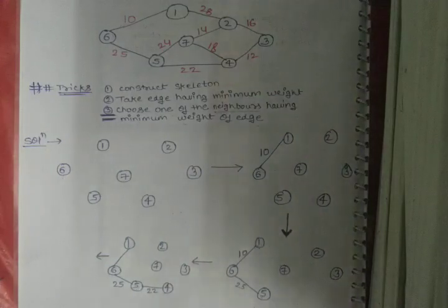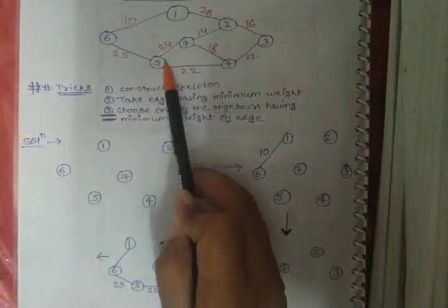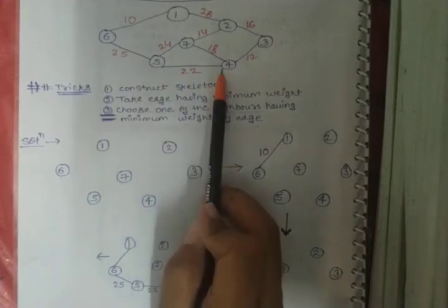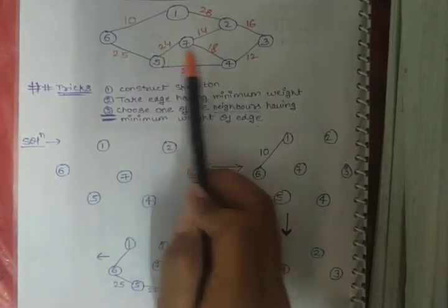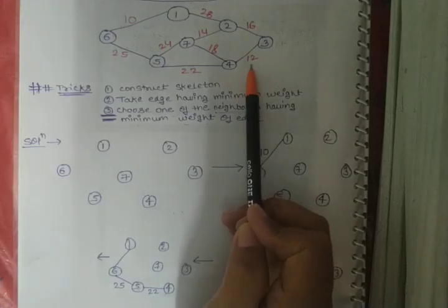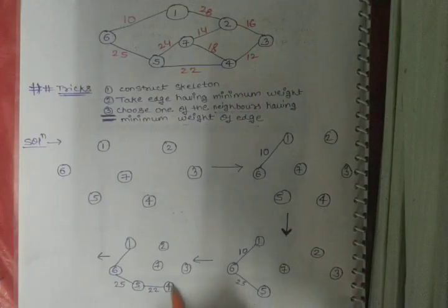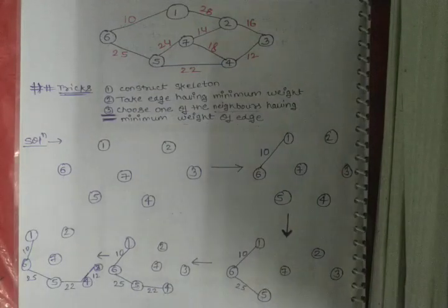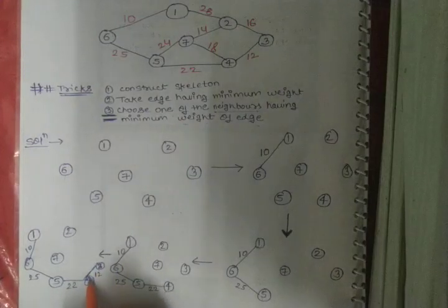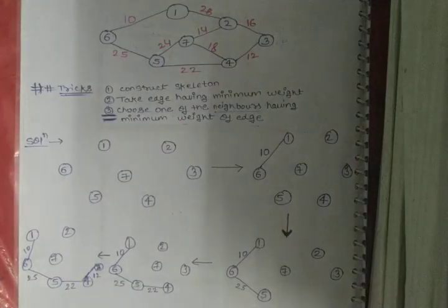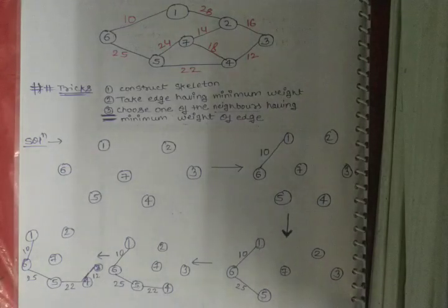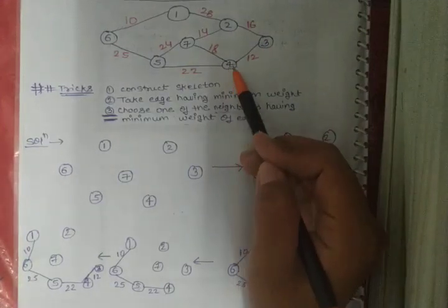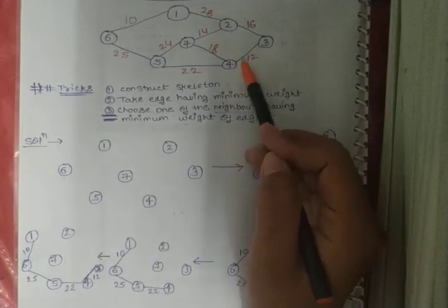We have to see neighbor nodes of nodes 1, 5, and 4. The edge to node 3 from node 4 has value 12, edge to node 5's neighbor is 24, and node 1's neighbor is 28. The minimum is 12. So in the next step we construct the edge connecting node 4 to node 3 with edge value 12. These two become neighboring nodes in our spanning tree.